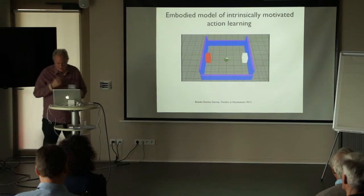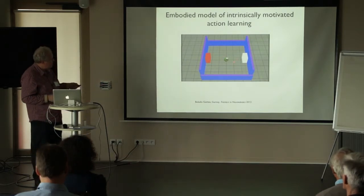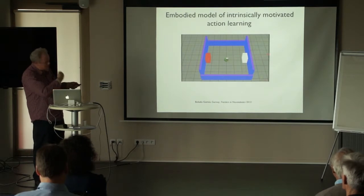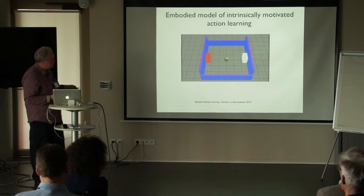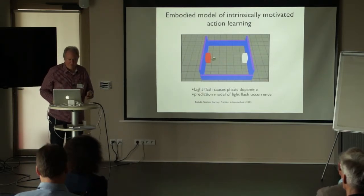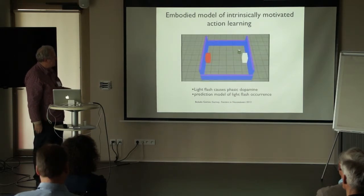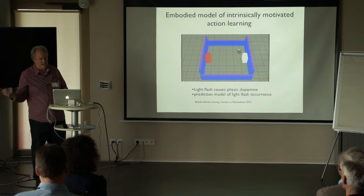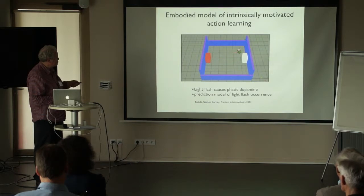Coincidentally, we were developing a task which, while not initially modelled on that scenario, turned out to be an exact replica. We didn't have snout holes, but we had a small mobile robot which could elicit light flashes by bumping into a particular coloured cube. It knew the difference between red and white — that's all. It roamed around this arena bumping into these cubes, and was reinforced for bumping this one and not that one. The light flash causes phasic dopamine in our model, and we have an internal prediction model of when this light flash will occur.